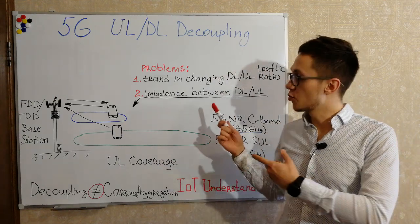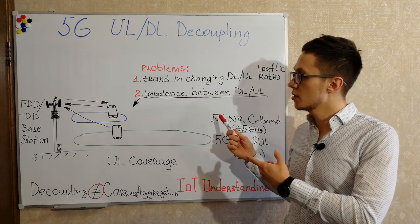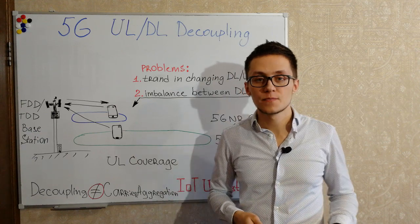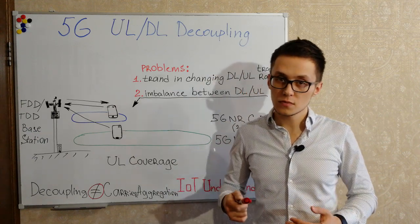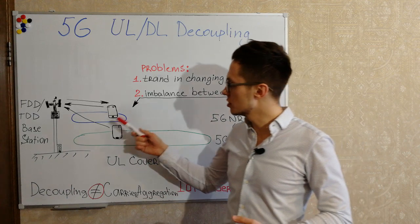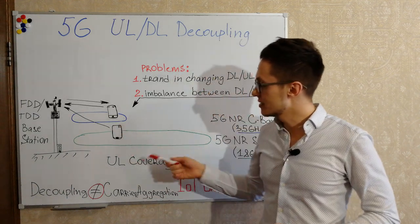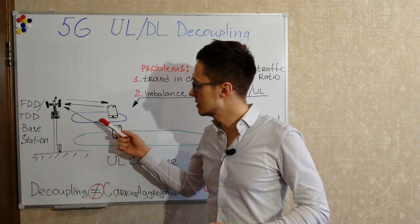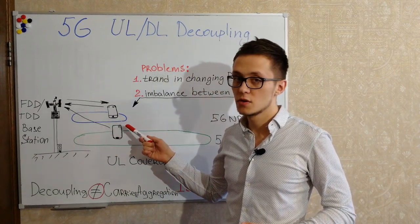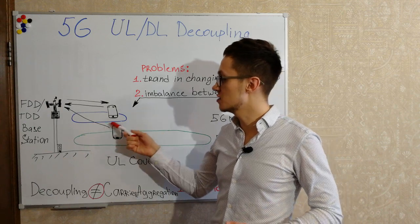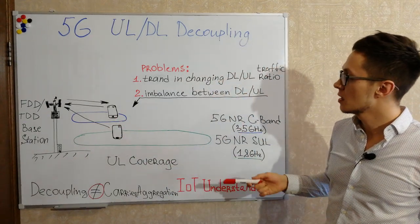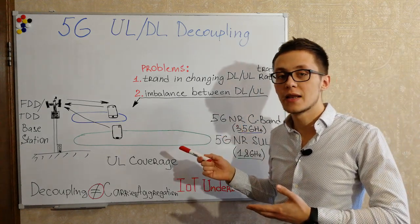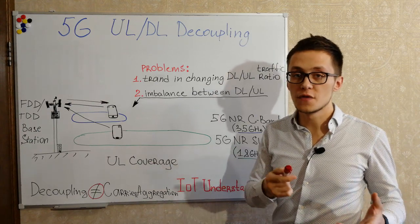This second problem is even more common for millimeter waves and high frequencies in 5G. In the uplink direction, as shown in this example, the user equipment can struggle to send data at the cell edge when using millimeter waves or C-band. In this case, 5G uplink decoupling can help solve this problem.